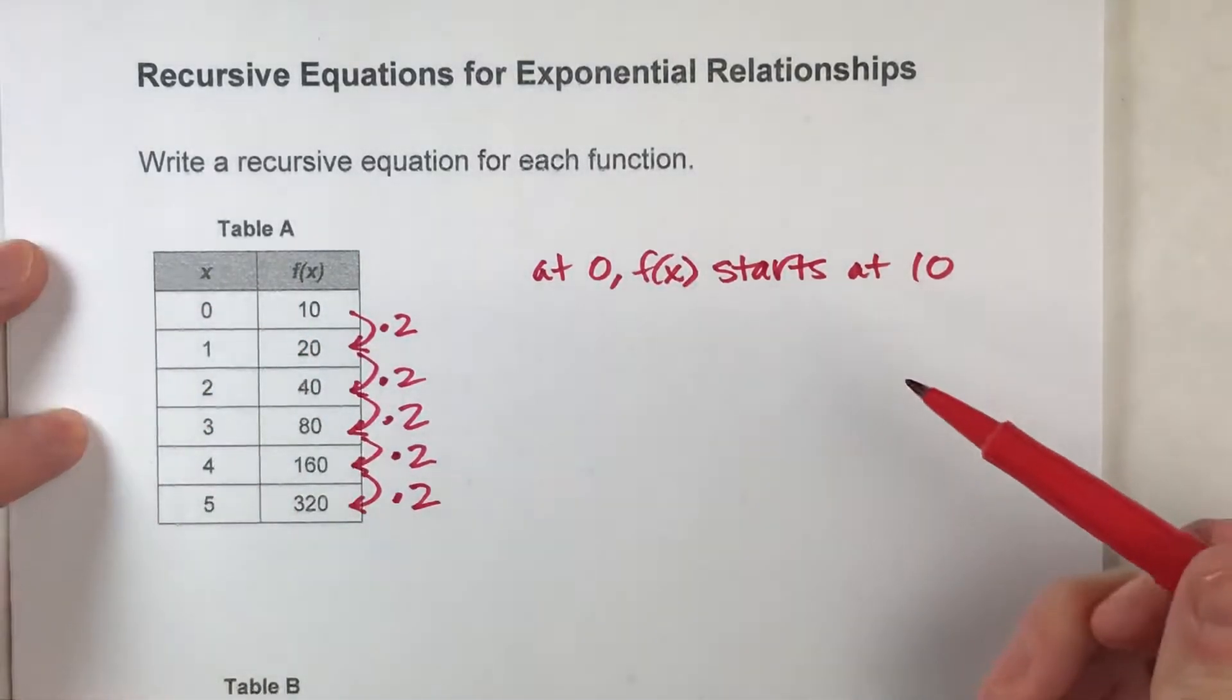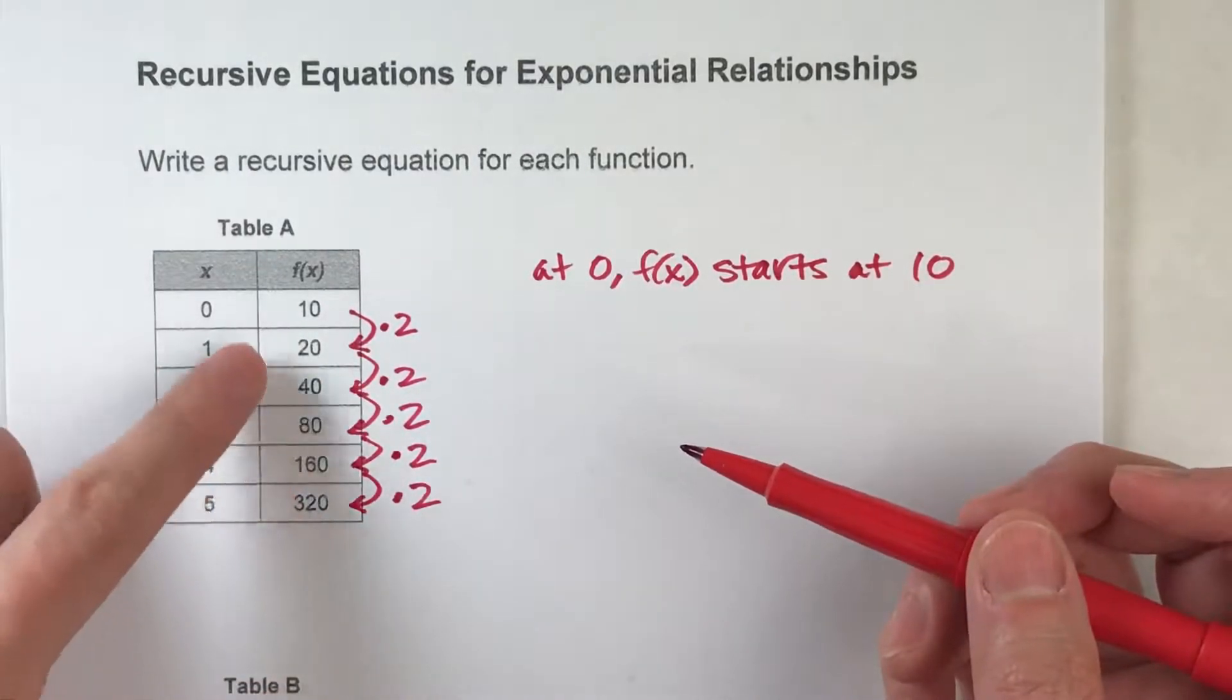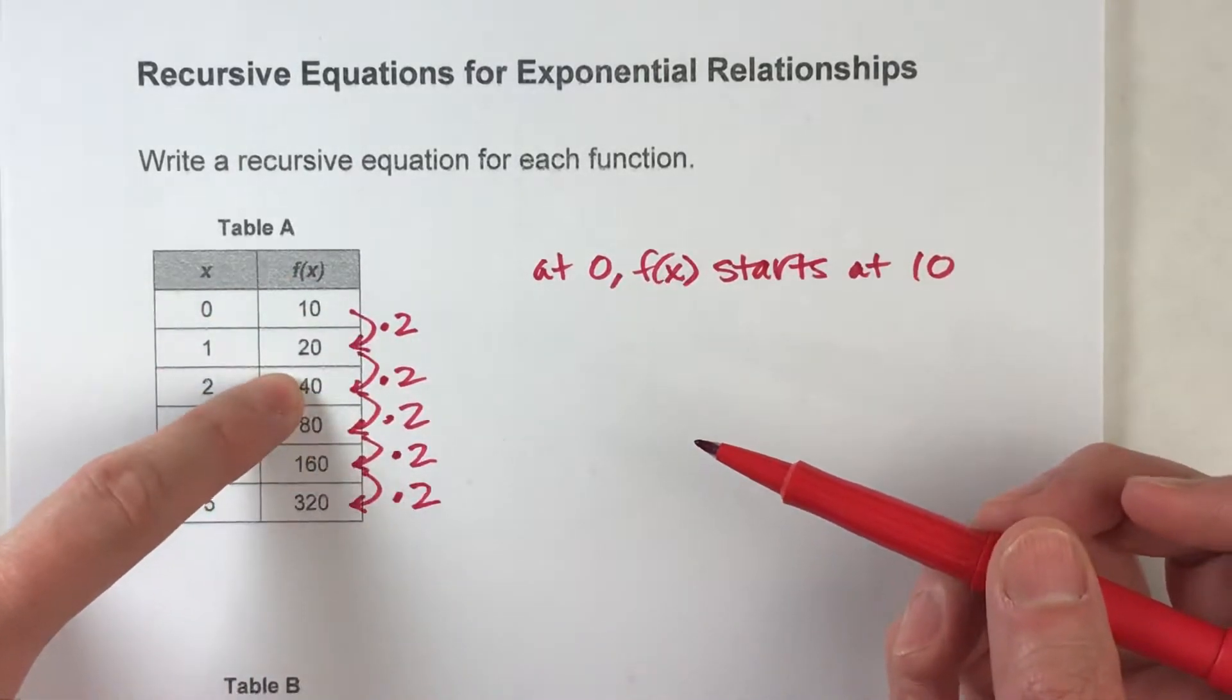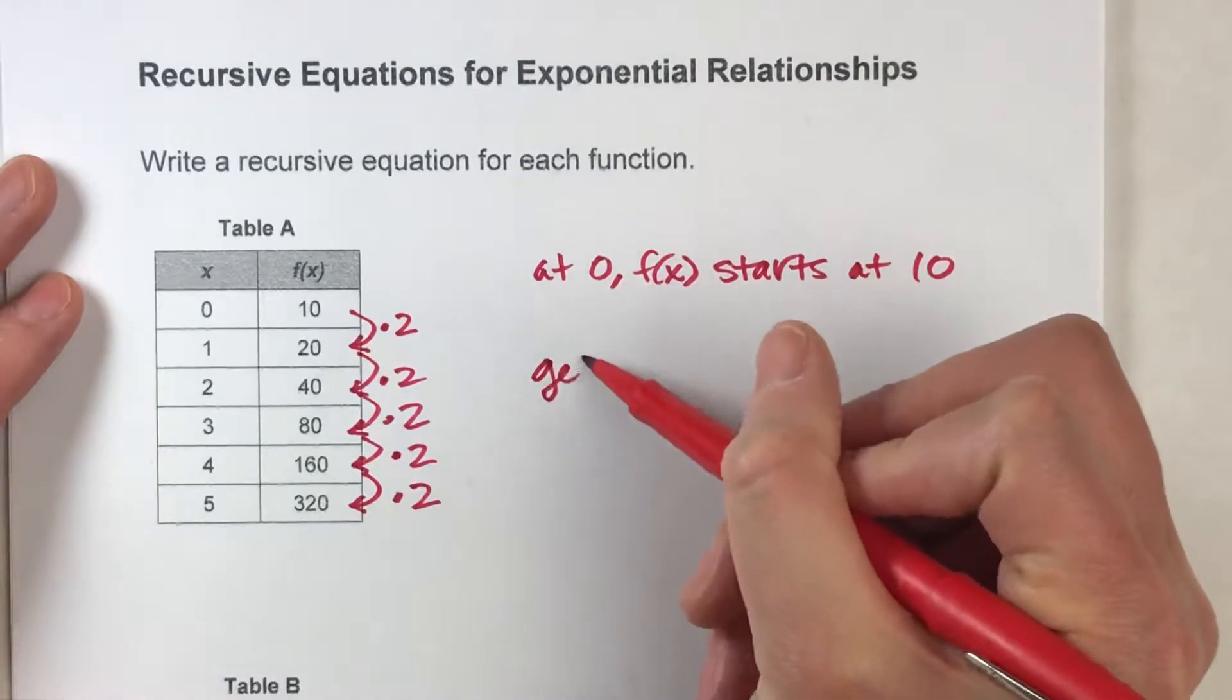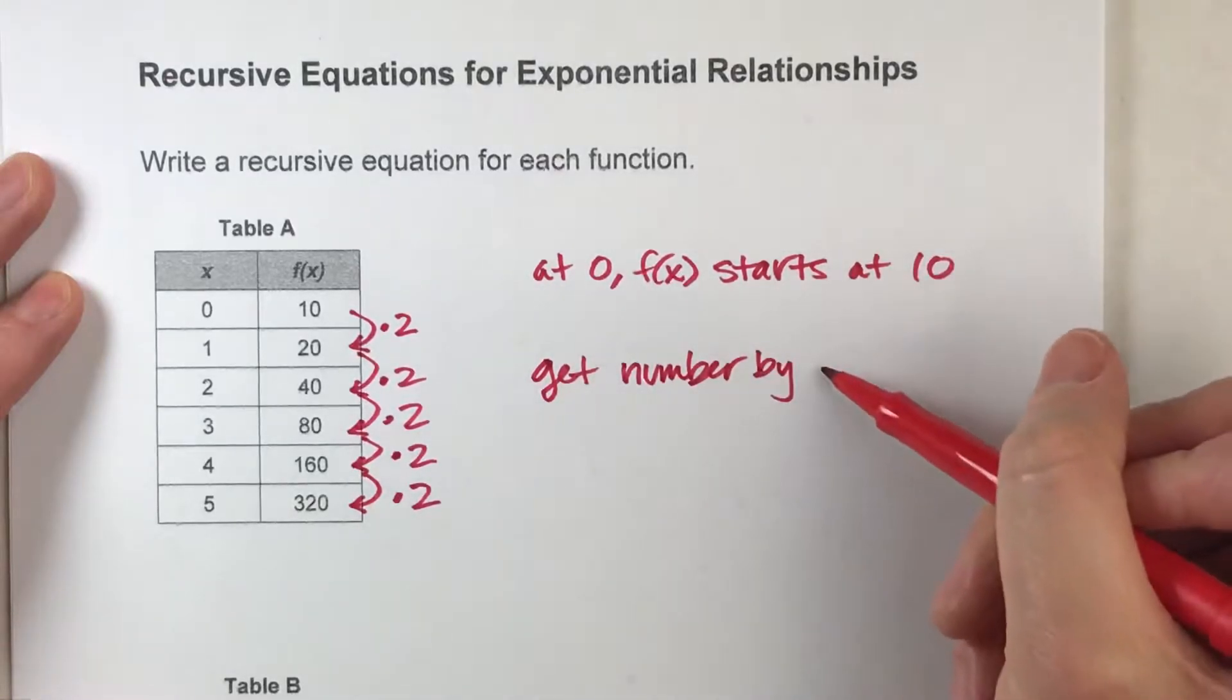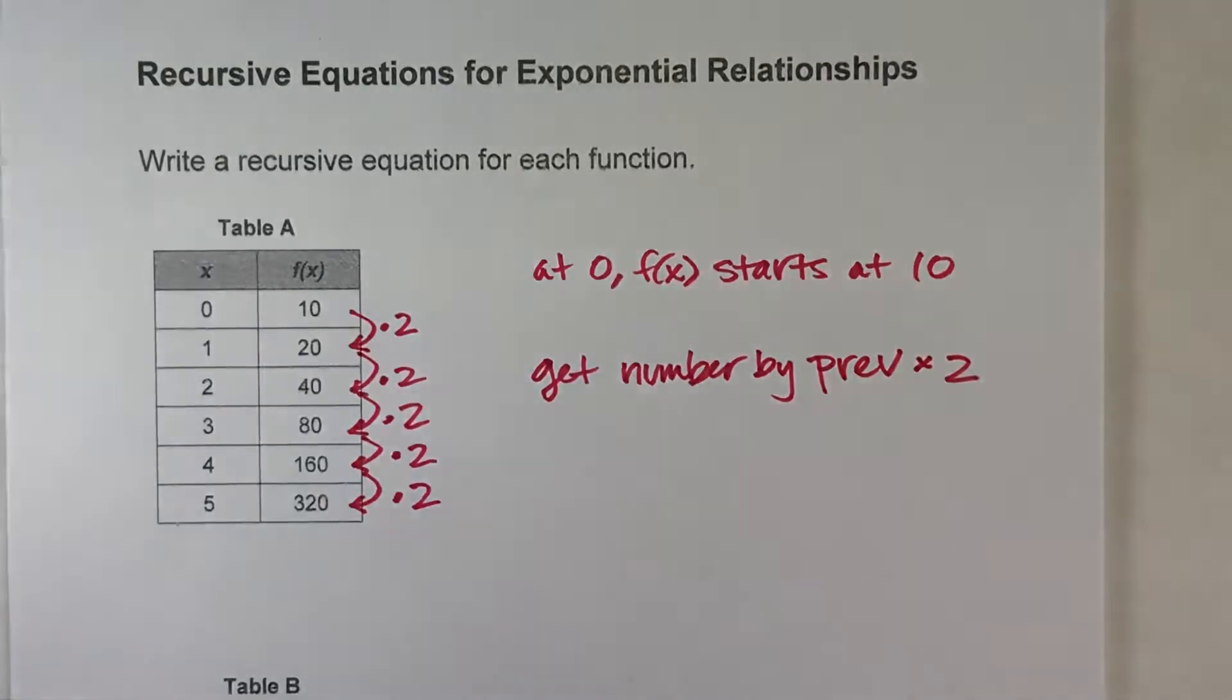Now what else do we know? Well we know that the pattern is to get any value of f of x, we take the previous number and multiply it by two and we get the next one. So get number by taking the previous and multiplying it by two. All right, so that kind of describes our pattern.